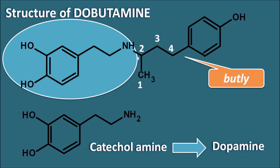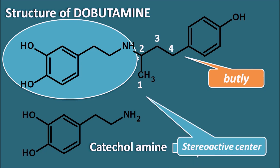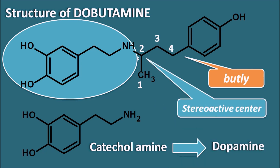We can observe a stereocenter at the second position. Because of this stereocenter, Dobutamine can exist in two isomers — plus as well as minus isomers. The plus isomer is more selective for the beta-1 receptors, whereas the minus isomer is more selective for the alpha-1 receptors.